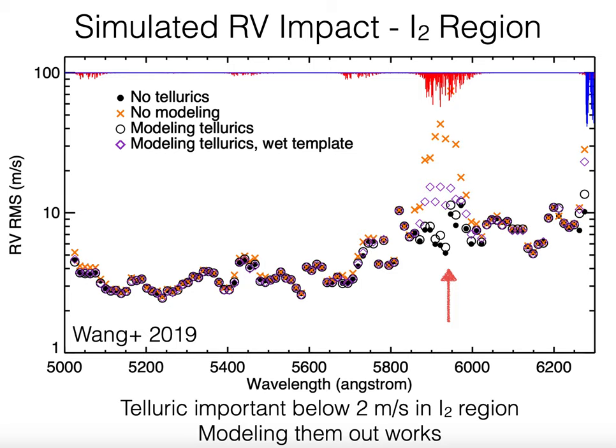Chern-Wong and collaborators recently had another nice paper looking specifically at the iodine cell region—about 500 to 620 nanometers. She tested different strategies for dealing with telluric water vapor, particularly around 590 nanometers. She found that the impact of these lines is important when seeking to go below about one or two meters per second in this spectral region, and also that trying to model the tellurics to mitigate their impact was highly effective.